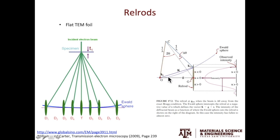If the Ewald sphere cuts the relrod from the upper top, the excitation error is negative. If the Ewald sphere cuts the bottom half, the excitation error will be positive.